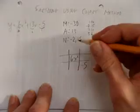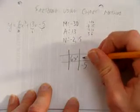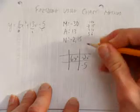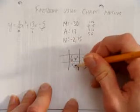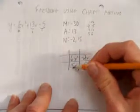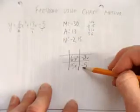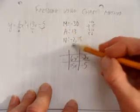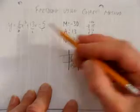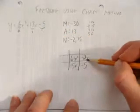Now I'll take my two numbers from N, negative 2, and call it negative 2x, and 15, 15x. What I've done is complete the lower part of the grid using the A and the C, but I split the B, the 13, into two pieces. 13 becomes negative 2 and 15, so 13x becomes 15x and negative 2x.